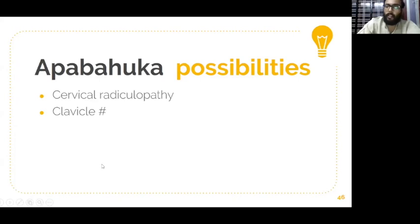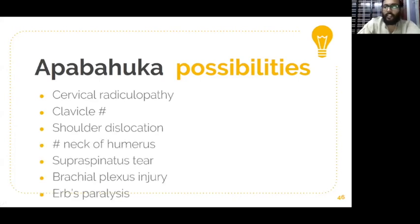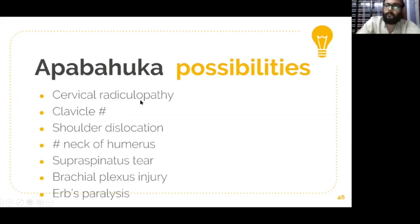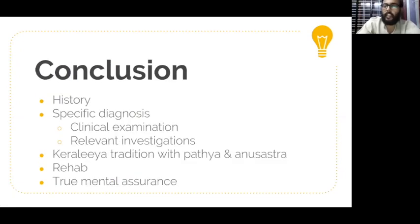The differential diagnosis includes many conditions, but most commonly: cervical radiculopathy C5-C6, which is the most common cause of shoulder pain. The most common area of disc lesion in the cervical spine causing radicular pain over the shoulder is C5-C6. Other differentials include clavicle fracture, shoulder dislocation, fracture neck of humerus, supraspinatus tear, brachial plexus injury, Erb's palsy, and acromioclavicular joint subluxation. Clinical examination is very important in giving better results to the patient.